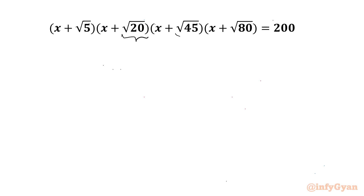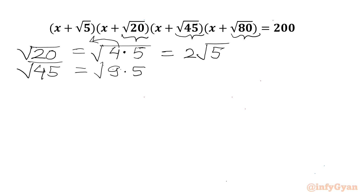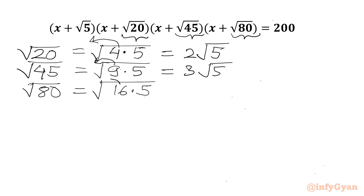I will simplify √20, √45, and √80. We know that √20 can be written as √(4×5). This 4 will come out as 2, so √20 = 2√5. Similarly, √45 = √(9×5), and 9 comes out as 3, giving 3√5. Similarly, √80 = √(16×5), and 16 comes out as 4, giving 4√5.